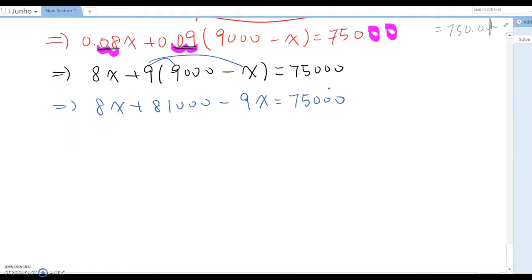On the left side, we see two different X terms, so we can combine right term. Then this becomes negative X plus 81,000 equal to 75,000.